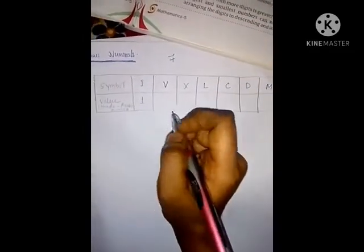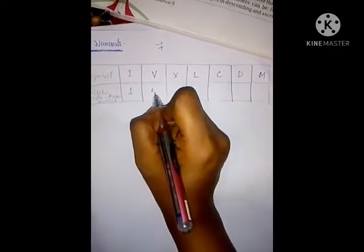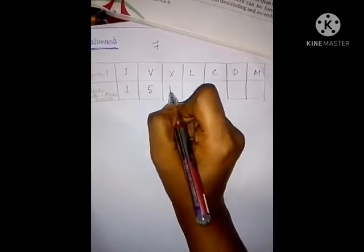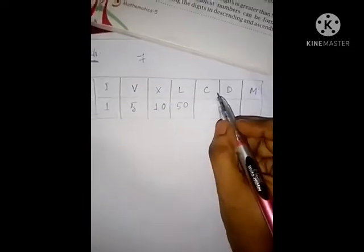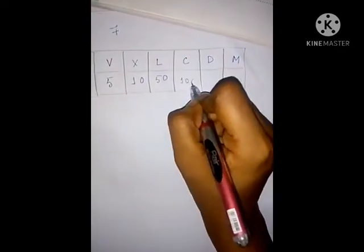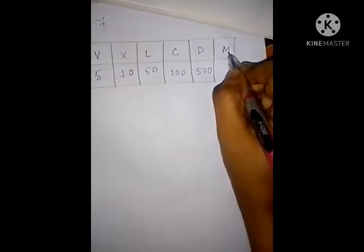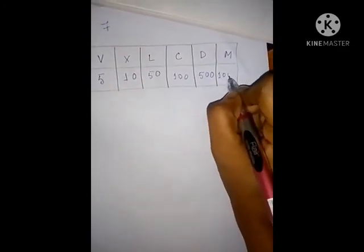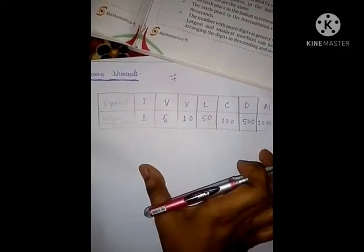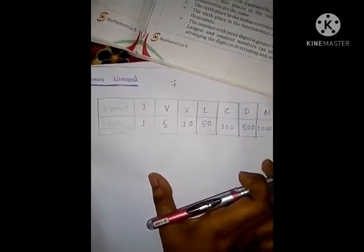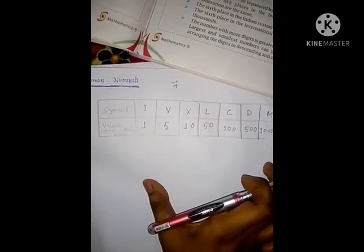The values are: I means 1, V means 5, X means 10, L means 50, C means 100, D means 500, and M means 1000. You have to remember this chart. Make a chart like this on chart paper and paste it on your wall in front of your table.